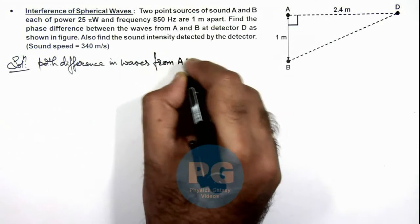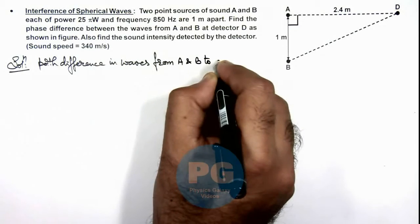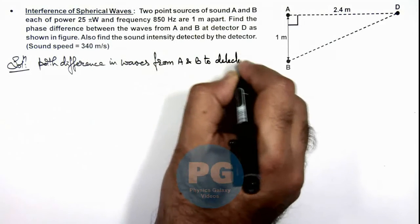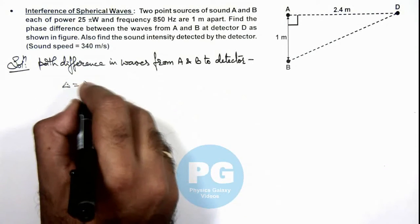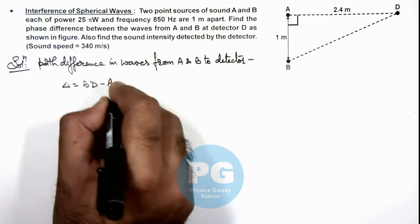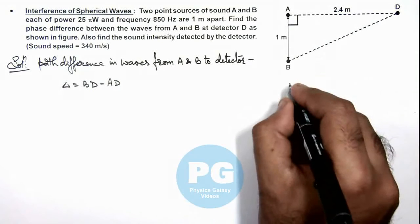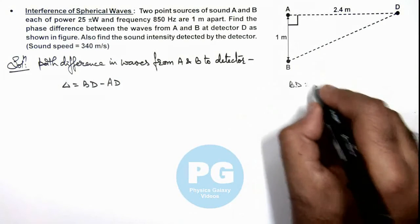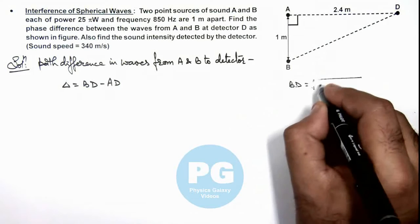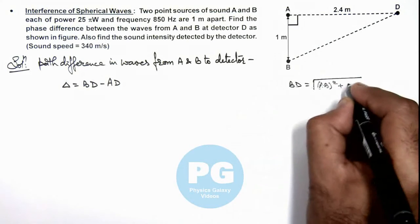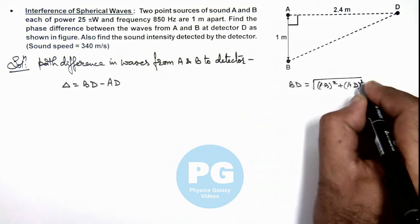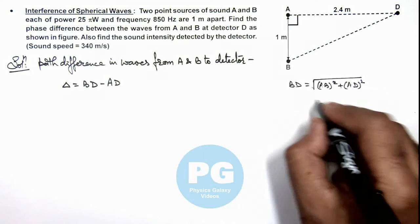From A and B to detector, then this path difference we can simply write as BD minus AD. The value of BD we can calculate as the root of AB squared plus AD squared.